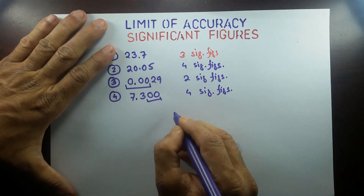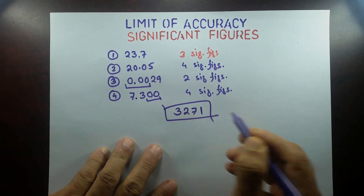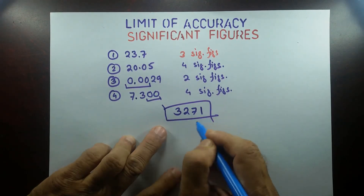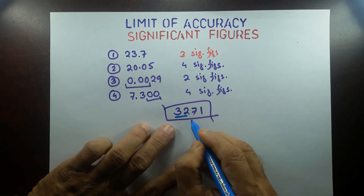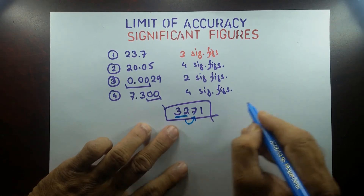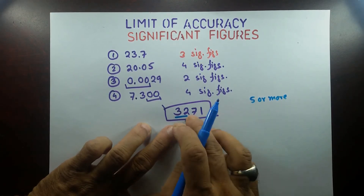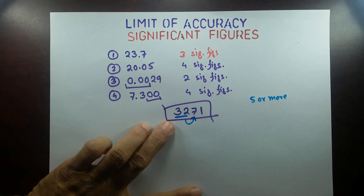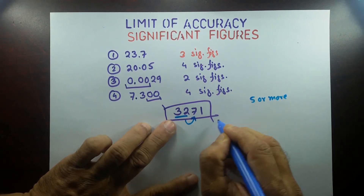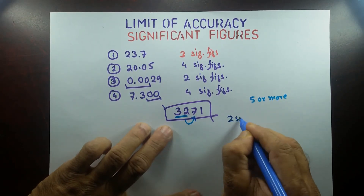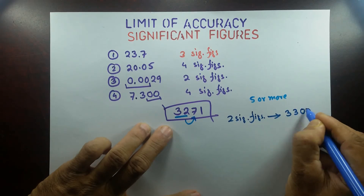Sometimes a question asks you to express a number in a given number of significant figures. For example, take 3,271 — a four-digit number — and the question may ask you to express it in two significant figures. So we look at the first two digits, then look at the next digit: if it is five or more, add one; otherwise leave it, and replace the rest with zeros. So in two significant figures, 3,271 becomes 3,300.